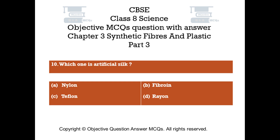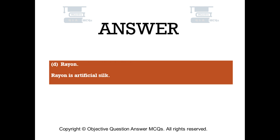Question number ten. Which one is artificial silk? Option A: nylon. Option B: fibroin. Option C: teflon. Option D: rayon. The right answer is option D — rayon. Rayon is artificial silk.